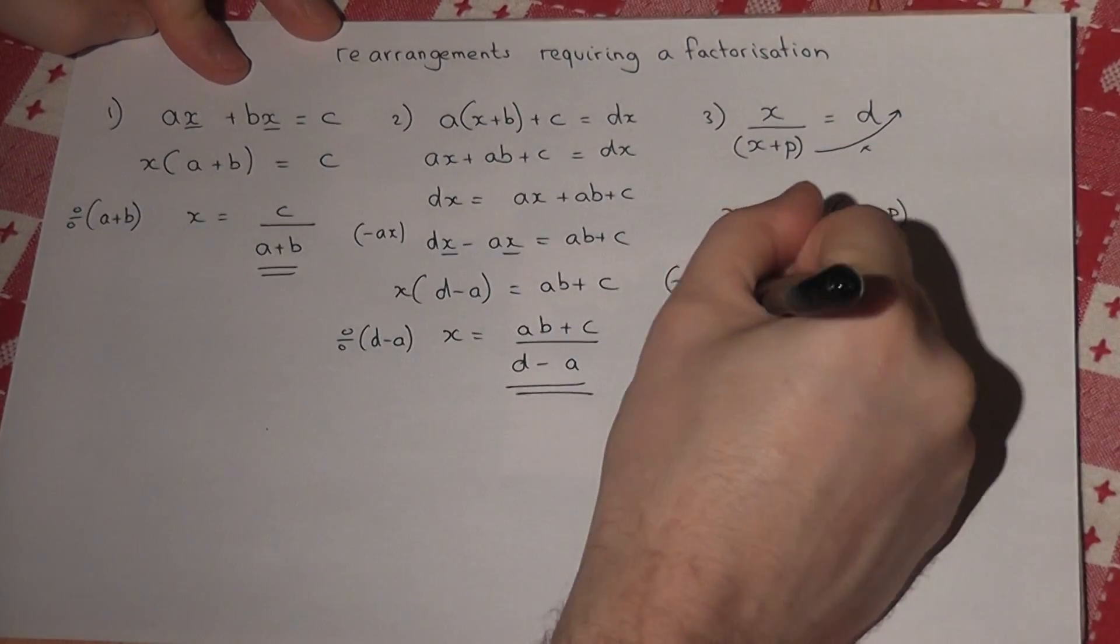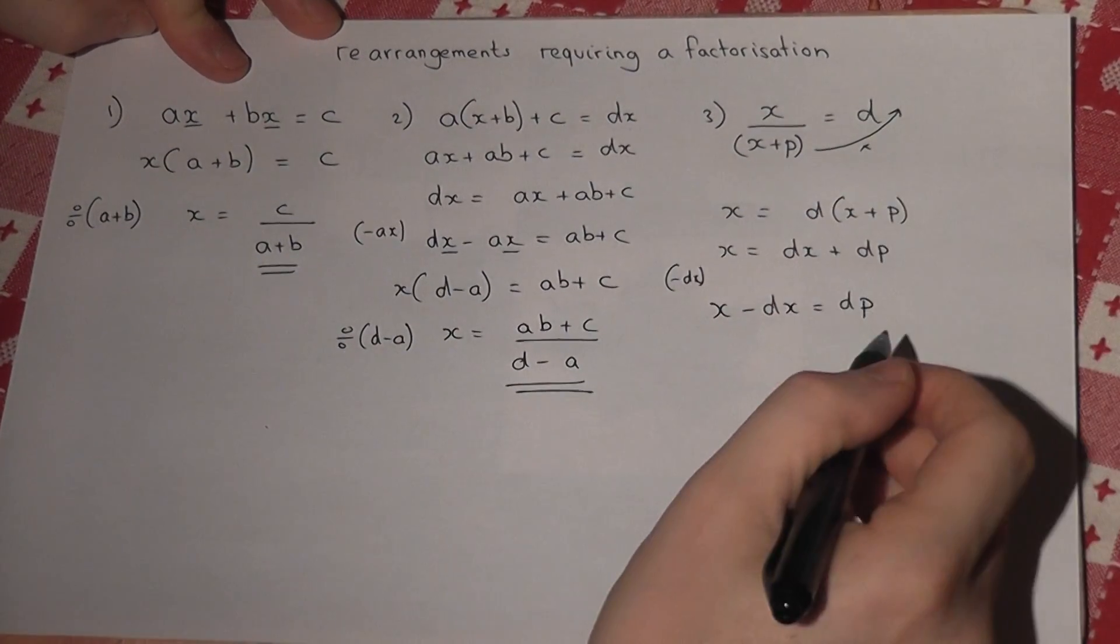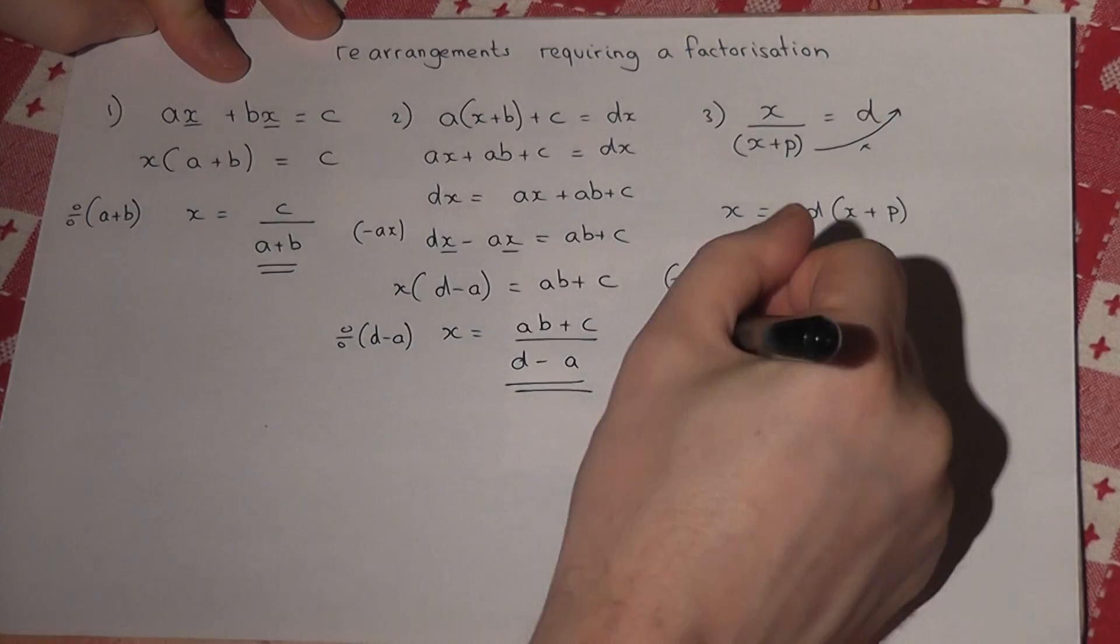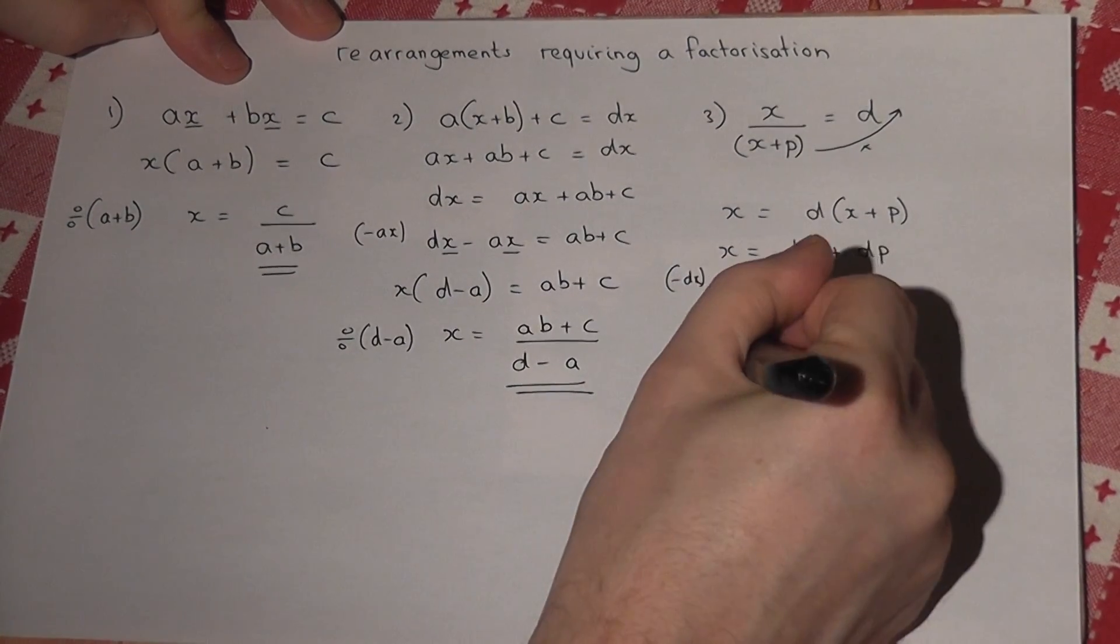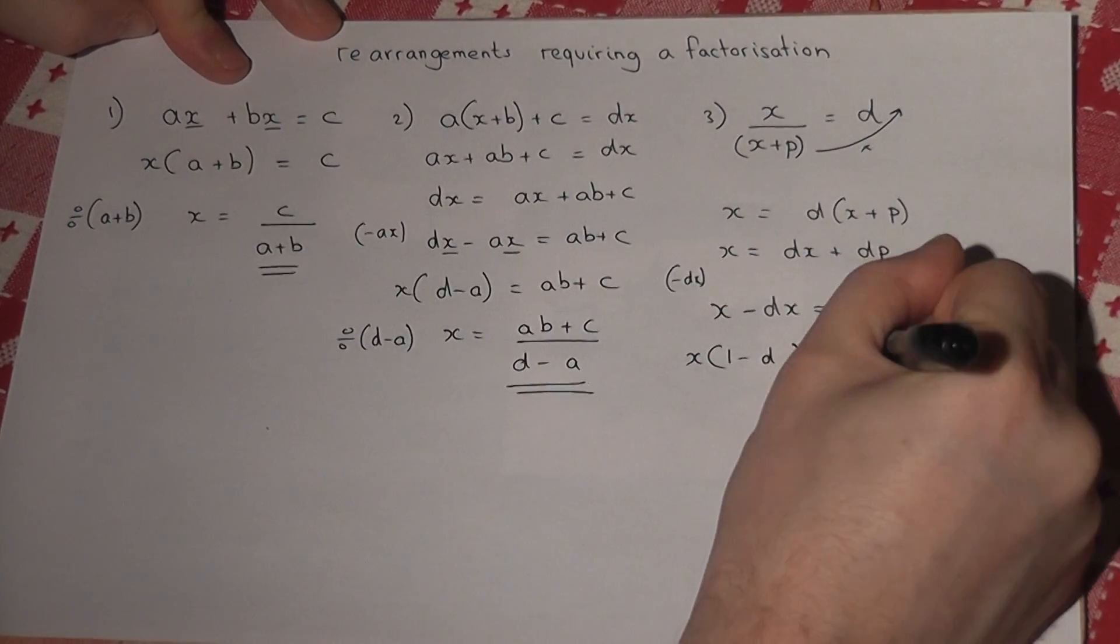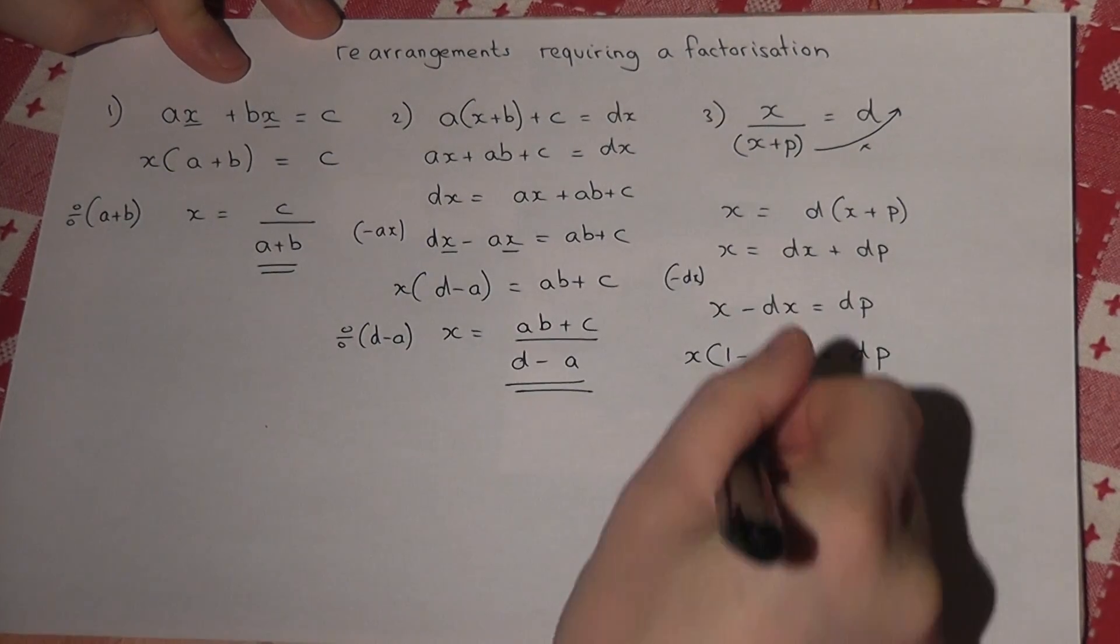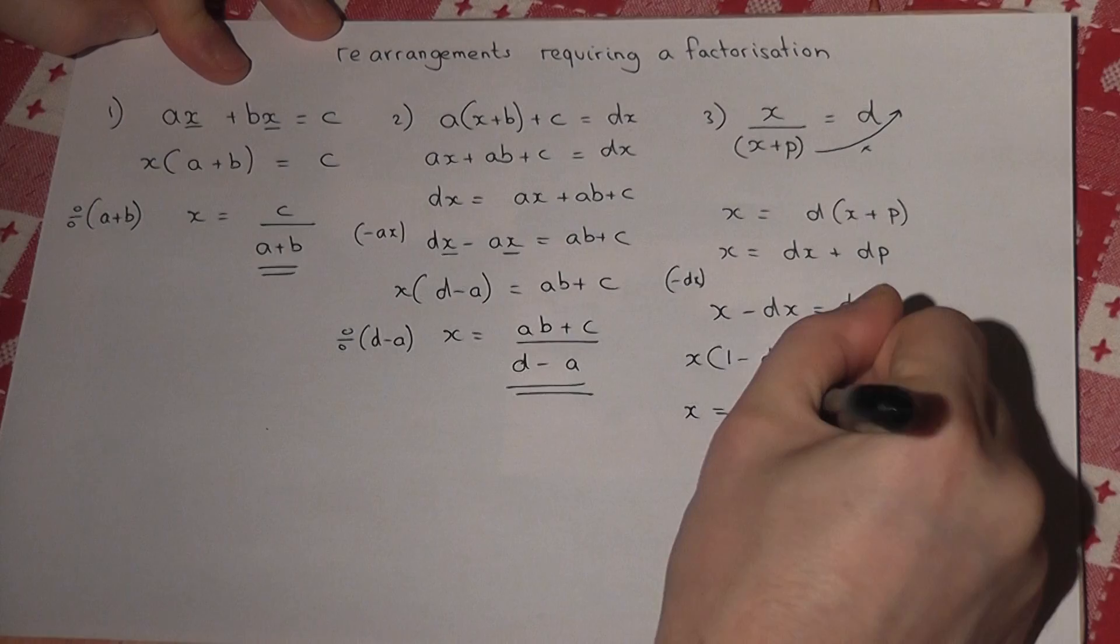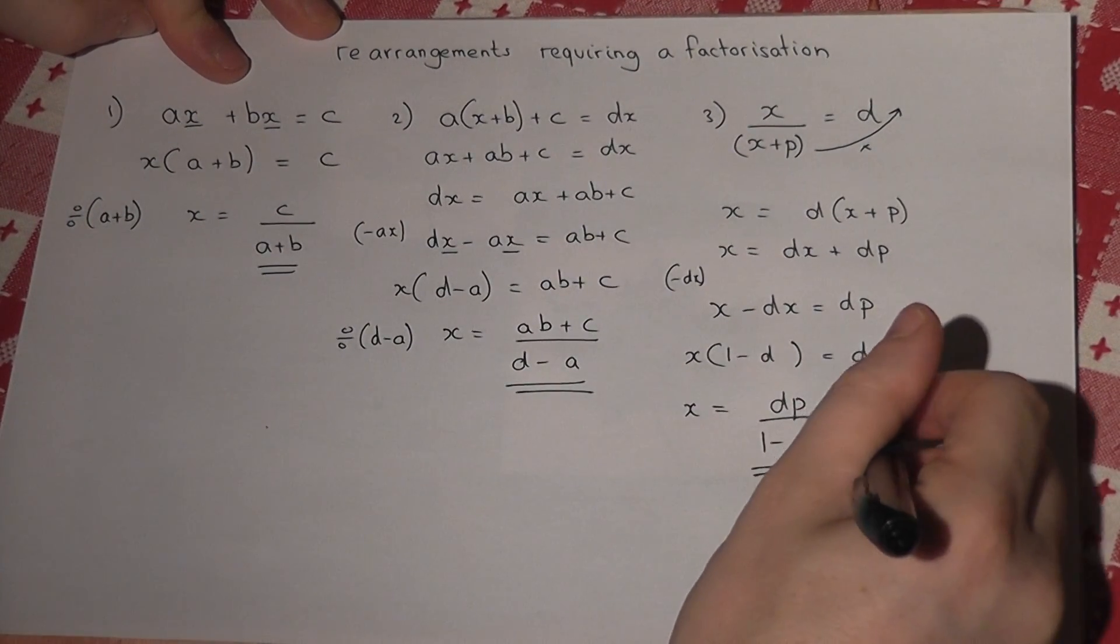So x - dx = dp, and then factorize. I pull a factor of x out. Be careful, there's one x here, so x(1 - d) = dp. Then divide by the factor, so x = dp/(1 - d).